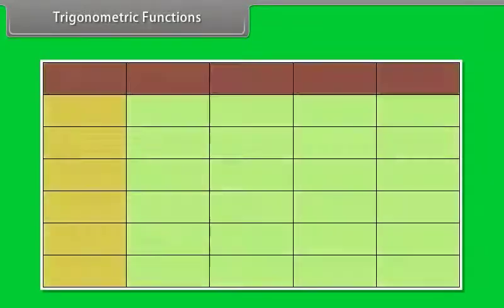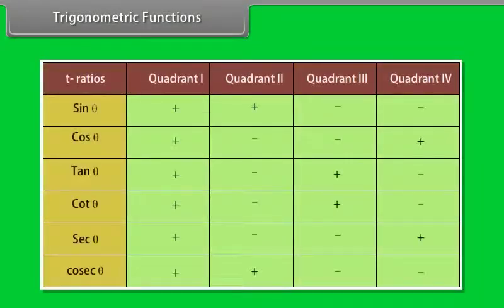In the table given below, the signs of all the T-ratios are given in each quadrant.